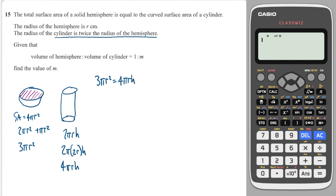We're told these two things are equal, so 3πr² is equal to 4πrh. I can cancel through by π and also divide through by r to get this, and this then tells me that h is equal to 3r over 4. Now it says given that the volume of the hemisphere to the volume of the cylinder is 1 to m, find the value of m.